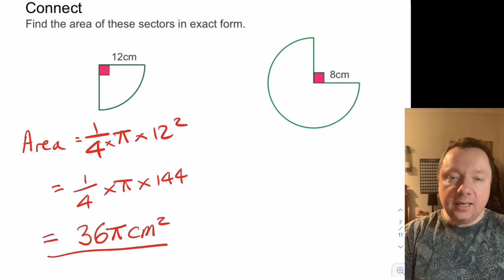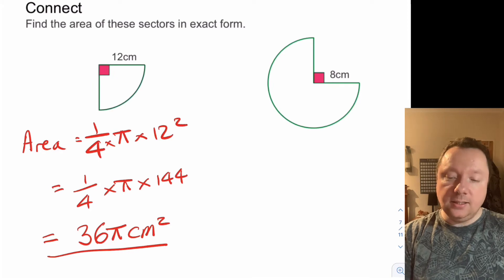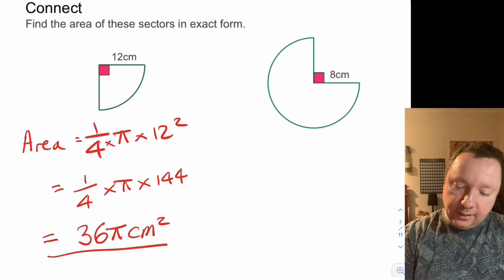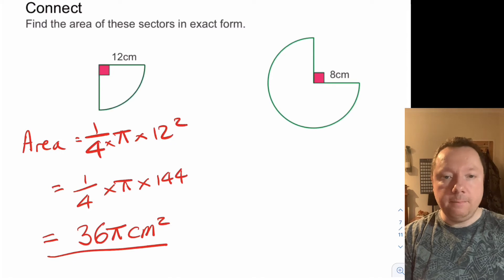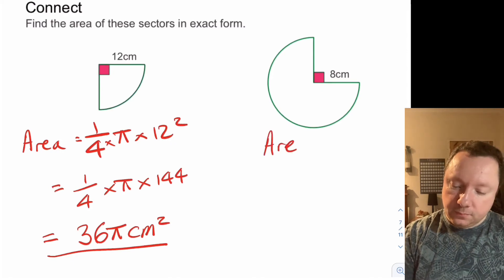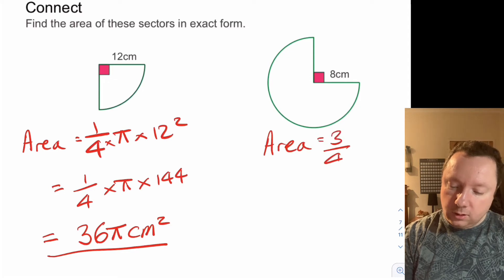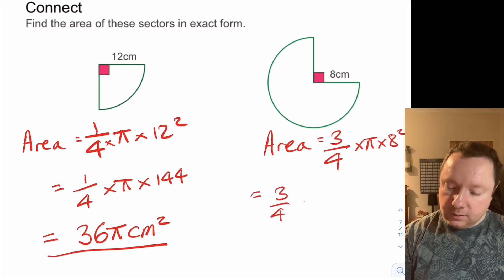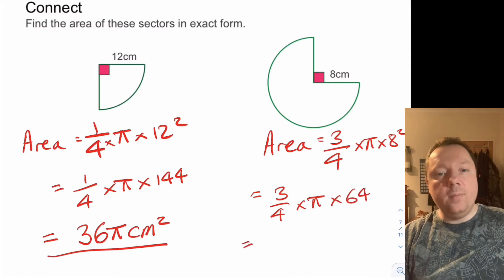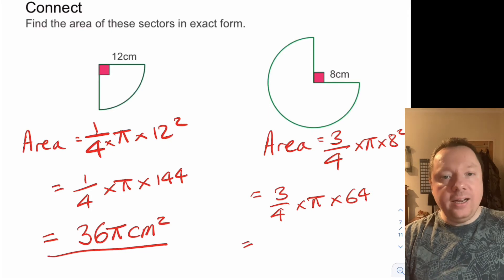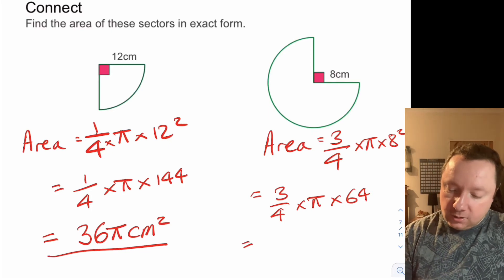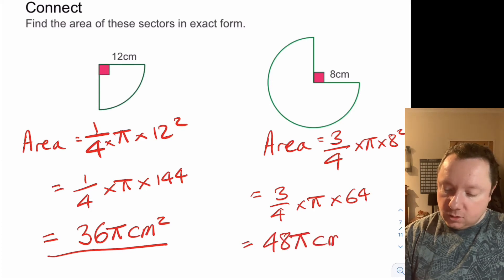For the second one, it should be clear that the sector is three-quarters, because you've got 90 degrees here which leaves 270 here, which is three-quarters of a circle. So we've got area equals three-quarters times pi times 8 squared — three-quarters times pi times 64. We divide by the bottom then times by the top: 4 into 64 is 16, and 3 times 16 is 48. So it's 48 pi centimetres squared.